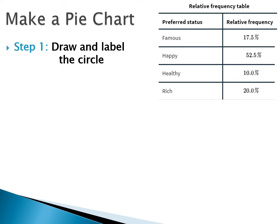The next display for categorical data is called a pie chart. You've probably seen a pie chart before, and you may or may not have made one — if you didn't make it yourself, you probably used a computer or technology, because it's kind of a pain to make by hand. To start, we're going to draw and label the circle, and we need to figure out how many degrees each section is going to take up.